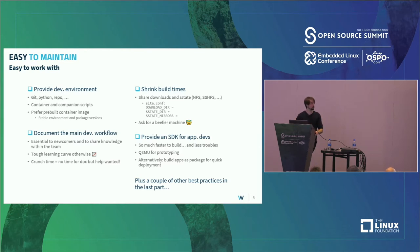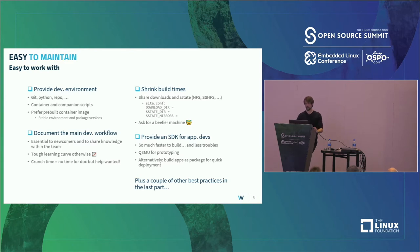The alternative is always to ask for a beefier machine. The fourth point is more for application developers: provide an application SDK. They don't need to rebuild a full Yocto distribution — some developers build all of Yocto just to compile their application, but you don't have to do that. Just provide an SDK that lets them build their application and deploy it, and you can deploy it as a package to save even more time.